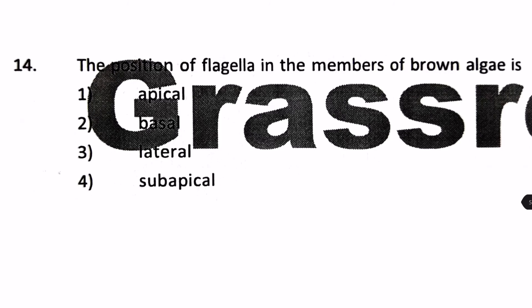The position of flagella in the members of brown algae is: apical, basal, lateral, or subapical? This is a detailed and difficult question, but it is factual — the flagella in brown algae is actually lateral. Number 3 is the correct answer.